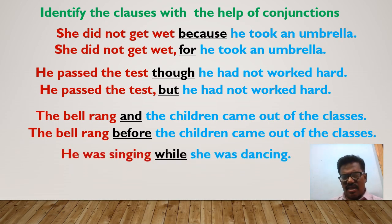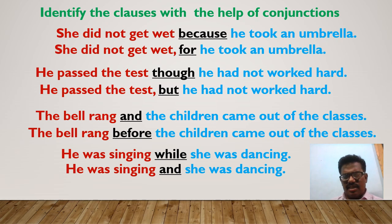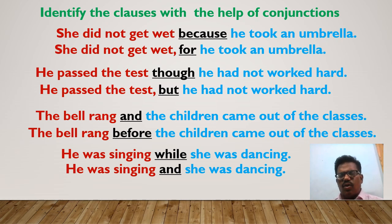In this sentence, the clause 'she was dancing' is the subordinate clause because it has the subordinating conjunction 'while' before it. In the next sentence, the same clause 'she was dancing' is the main clause because it has the coordinating conjunction 'and' before it. In this way, if a clause has a subordinating conjunction before it, it is called a subordinate clause.